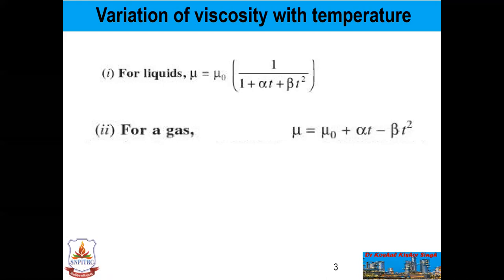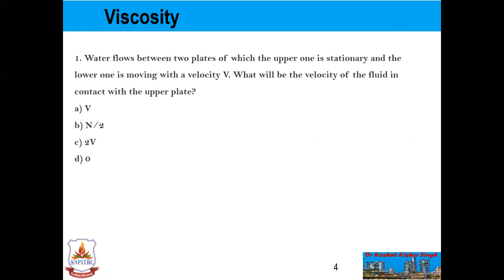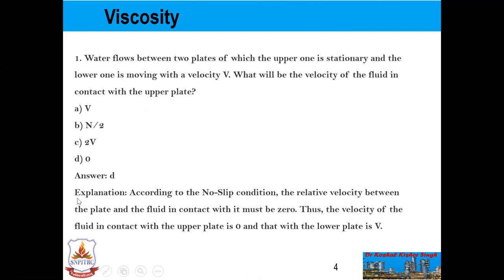Now we will see two examples on viscosity. Water flows between two plates, of which the upper one is stationary and the lower one is moving with a velocity V. What will be the velocity of the fluid in contact with the upper plate? This is an MCQ with four options. The answer is 0. According to the no-slip condition, the relative velocity between the plate and the fluid in contact with it must be zero. Thus the velocity of the fluid in contact with the upper plate is 0, and that with the lower plate is V.